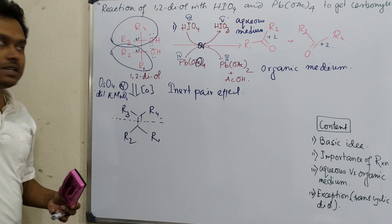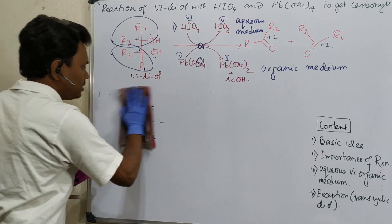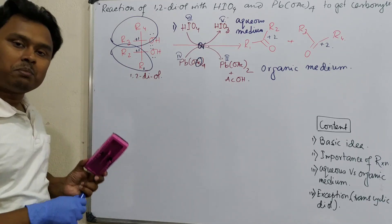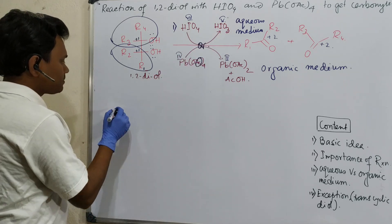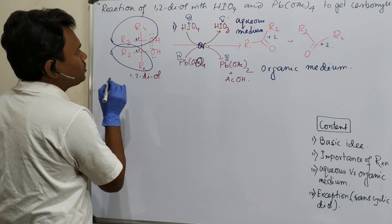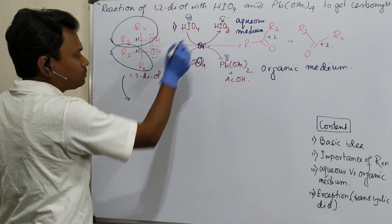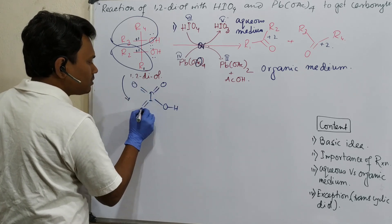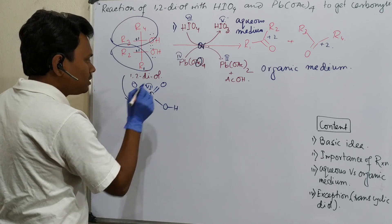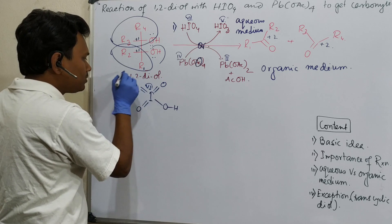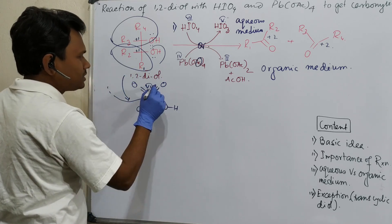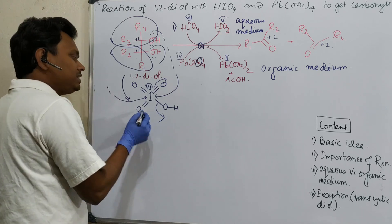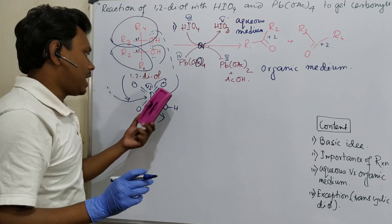Now let's discuss the mechanistic process of this reaction. This is an electron transfer between the oxygen of the diol and the hypervalent iodine or lead. For periodic acid: this is the iodine center in +7 oxidation state. When the diol reacts with periodic acid, the diol coordinates first, so it opens up. The second molecule attacks and ultimately leaves. The OH leaves, and three oxygens are present in the cyclic intermediate.